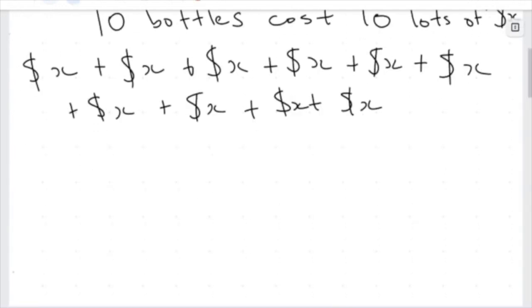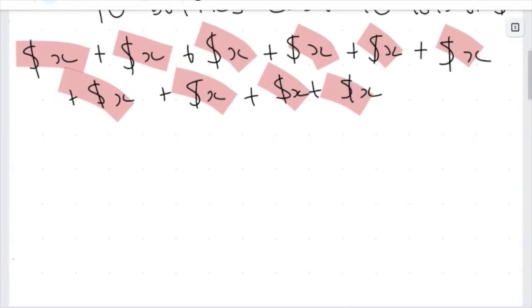So each of these represents one bottle. So 10 bottles, I have 1, 2, 3, 4, 5, 6, 7, 8, 9, 10 lots of the bottle. So 10 lots of x dollars.